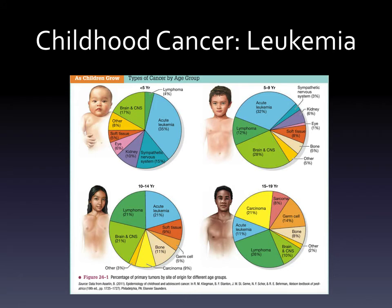We'll be covering childhood cancer by body system, starting with leukemia. This slide shows different types of cancer by age. In children under five, leukemia is the most common. From five to nine years it remains most common but brain, CNS, and lymphoma cancers increase. From ten to fourteen, leukemia incidence drops and is tied with lymphoma and CNS cancers. From fifteen to nineteen, leukemia drops significantly and other cancers become more common - so leukemia discussions are really focused on young children and school-agers.